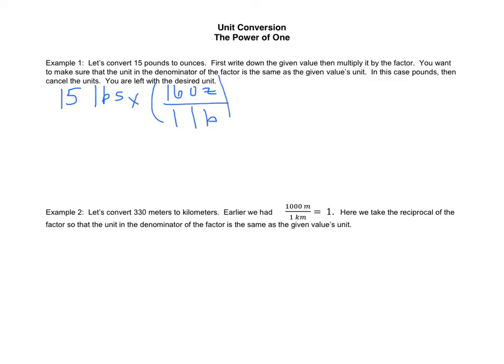We want the pounds in the denominator so we can cancel the pounds, and that leaves us with 15 times 16 ounces, which equals 240 ounces.